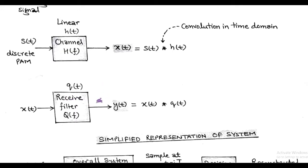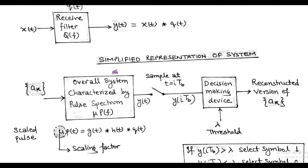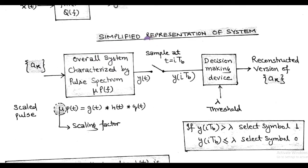Accordingly, we can represent the typical block diagram in simplified form. Here, the overall system indicating transmitter, channel, and receiver is characterized by the pulse spectrum μ·P(f), that is in the frequency domain.